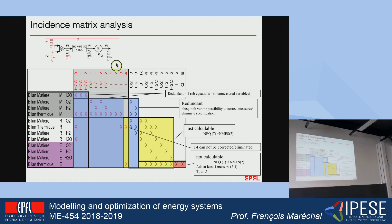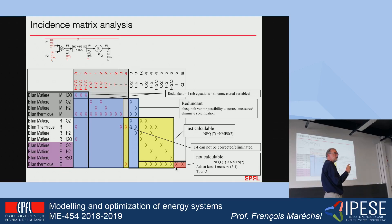If I give you the flow of hydrogen here, you will not be able to solve the heat load. You need to choose between receiving the value of T5 or the value of the heat load. So what this means is that I have not only identified what is missing, but I have identified the candidates for a measurement. If you give me T5, I can calculate Q; but if you give me Q, I can calculate T5 by solving the energy balance.